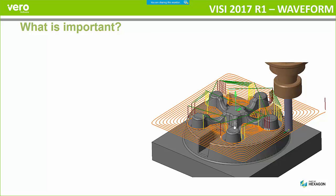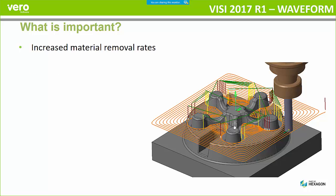I'm going to go back through the waveform strategy — why it's important and why we're using it. We're using this basically to increase the material removal rates. This is the main focus of this strategy. We're trying to do this to get the productivity up. Because we can do this and usually reduce the number of tools, it usually reduces the tooling costs as well. We've got figures that are going to be released shortly about the benefits for the tooling you're using, and the cost savings can be quite dramatic if you can get those tooling costs down.